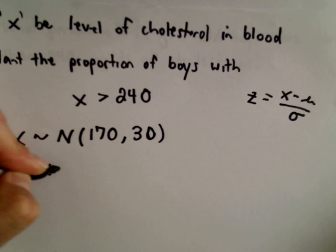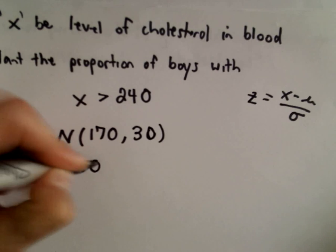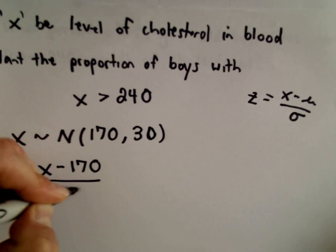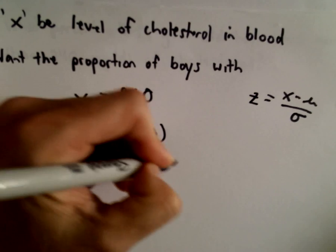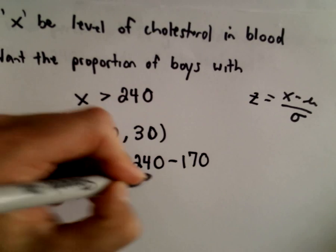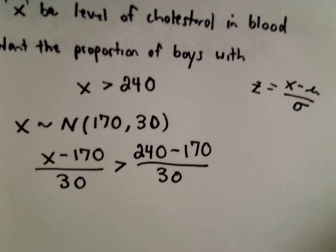So I'm going to standardize. I'm going to subtract the mean, divide by the standard deviation. And I'm going to do the same thing to the right side. I'm going to subtract the mean of 170 and divide by the standard deviation.